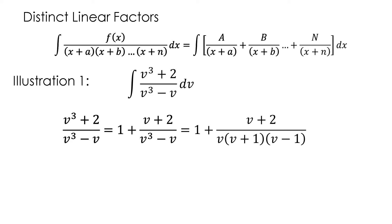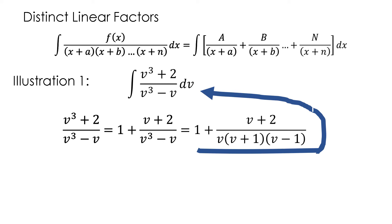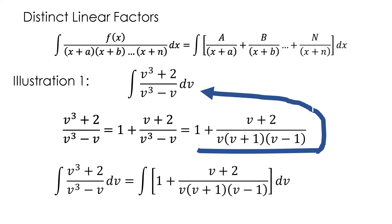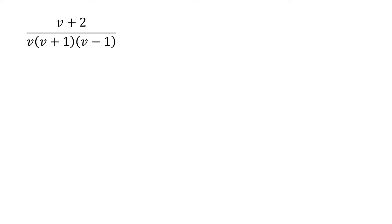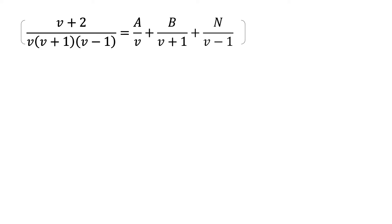We now substitute this into our integral, which becomes the integral of 1 plus (v + 2) / [v(v + 1)(v − 1)] dv. Considering the second term, (v + 2) / [v(v + 1)(v − 1)], we resolve this into partial fractions: A/v + B/(v + 1) + N/(v − 1).